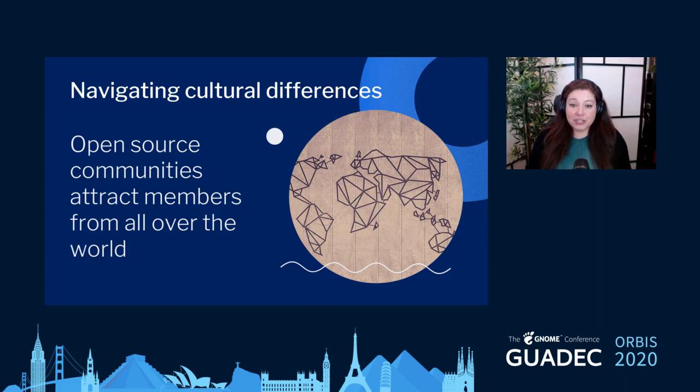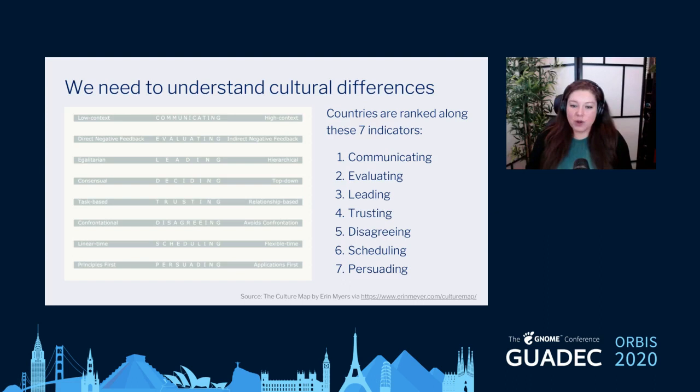The first is navigating cultural differences. This is really important in open source communities because they attract members from all over the world, or at least they should be. I was recently inspired by a cross-collaboration guide at GitLab about a book called The Culture Map by Erin Meyer.